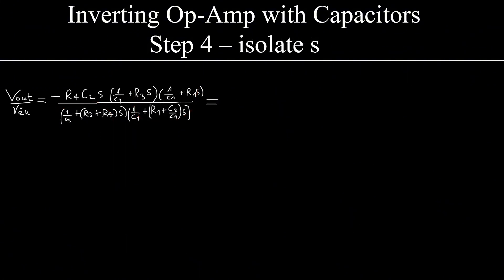Step number four, and final step, is going to be to isolate the s. We want to have always s over something by itself, or s over something plus one. It's very, very important and imperative that we do this. Now this is a very big fraction, so it's going to be s over 1 over R4C2.